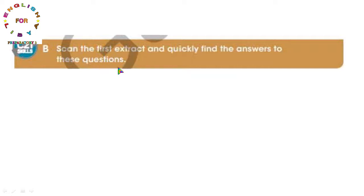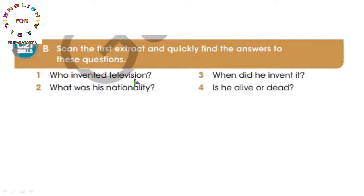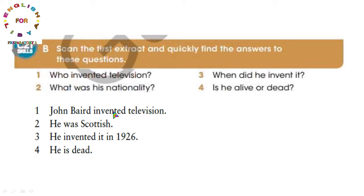Exercise B: اقرأ المقتطف الأول بسرعة وأجب على هذه الأسئلة الأربعة: من اخترع التلفزيون؟ ما كانت جنسيته؟ متى اخترعه؟ هل هو على قيد الحياة أو ميت؟ الإجابات: جون بيرد اخترع التلفزيون، كان سكوتلندي الجنسية، اخترعه في عام 1926، وهو ميت.